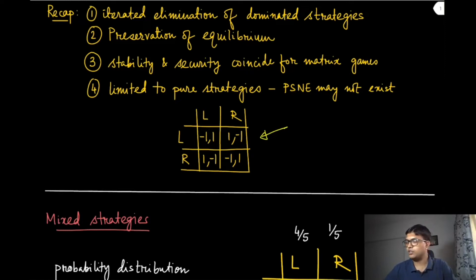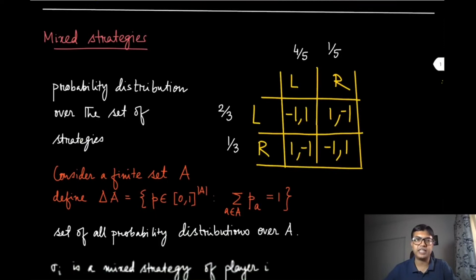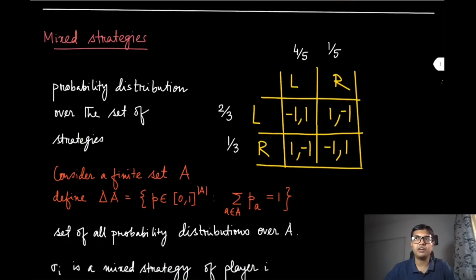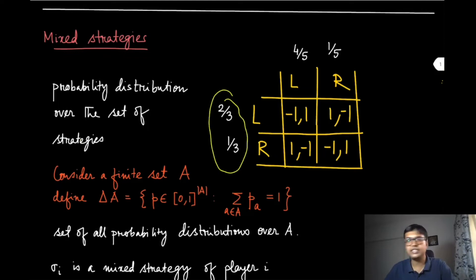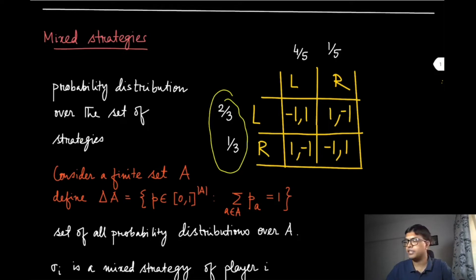To denote that, we now come to the world of mixed strategies. As the name suggests, informally this is a probability distribution over the strategies. So instead of picking strategies as pure, we are mixing them in a probabilistic way. In the same example, we can say that player one is mixing these two strategies L and R in the proportion two-thirds and one-third — so with probability two-thirds it picks L and with probability one-third it picks R. Similarly, the other player picks its two strategies with probability four-fifths and one-fifth.